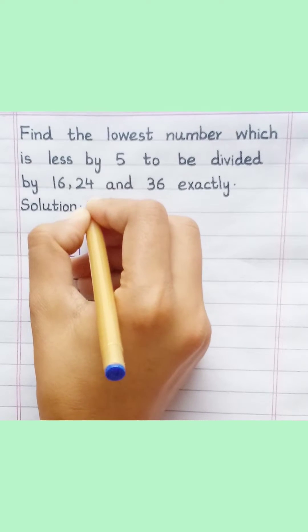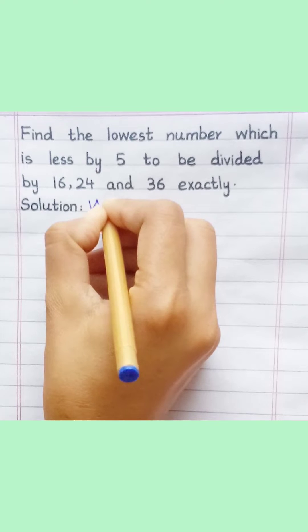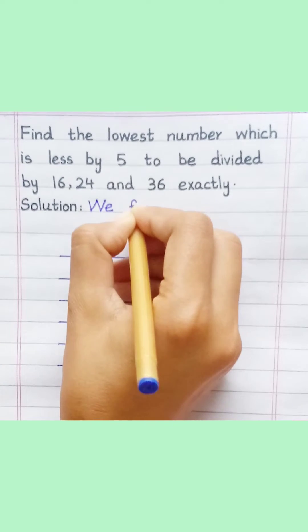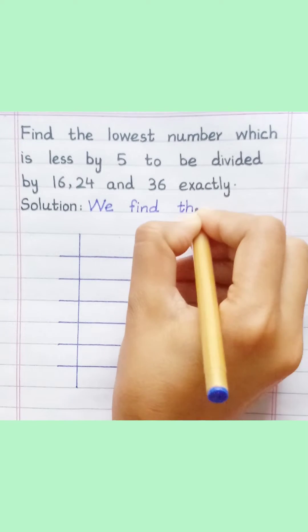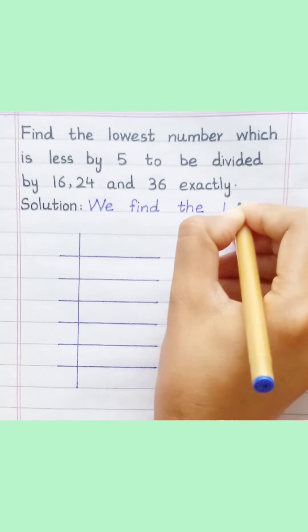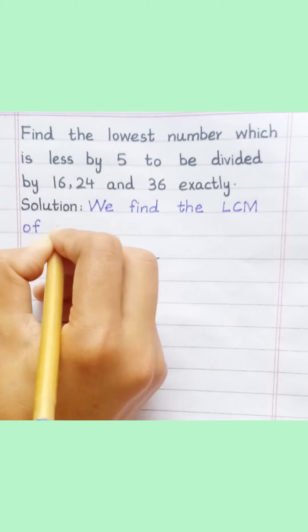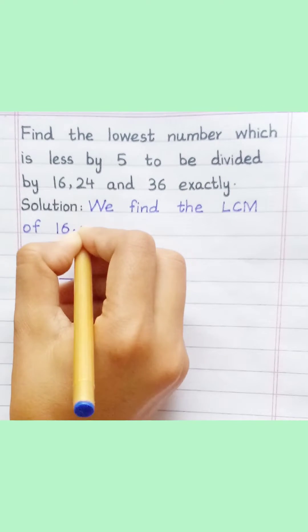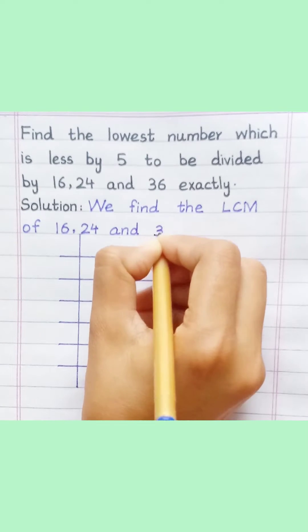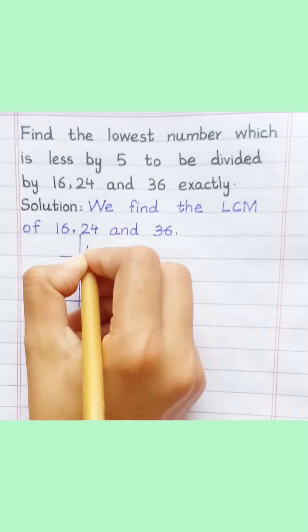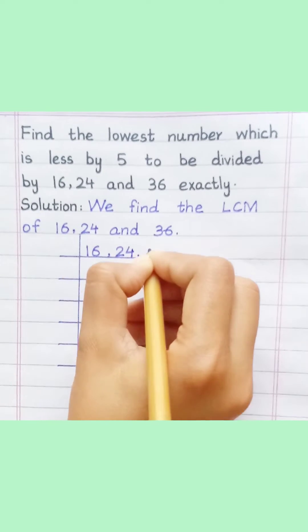Find the lowest number which is less by 5 to be divided by 16, 24 and 36 exactly. Solution: we find the LCM of 16, 24 and 36.